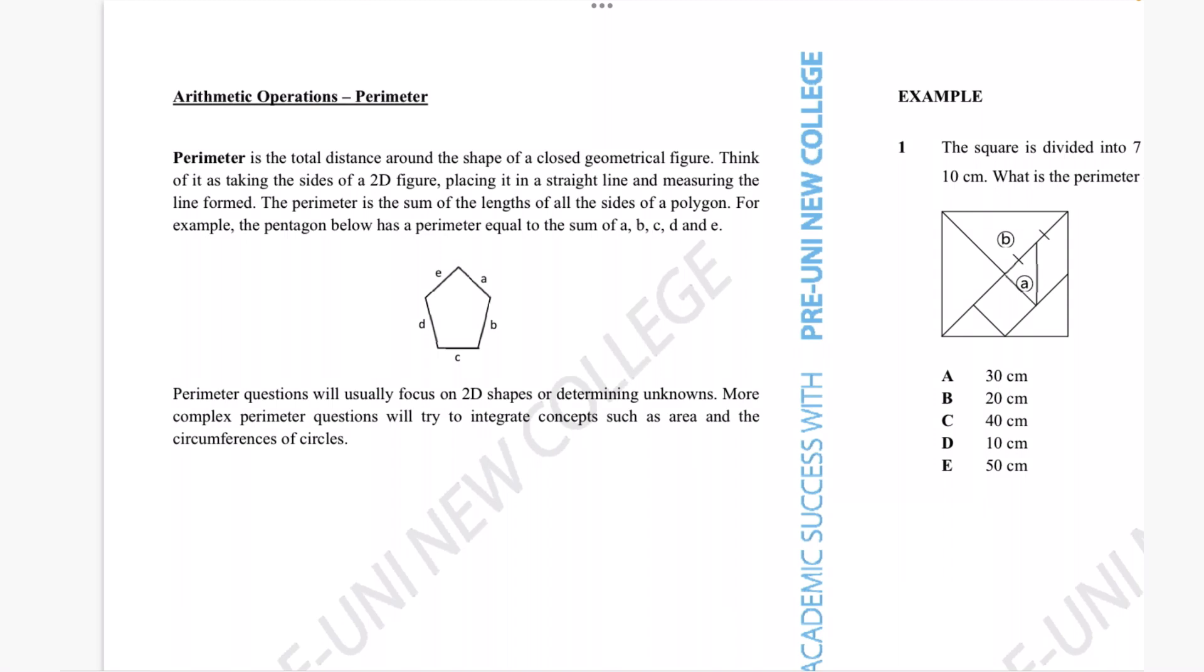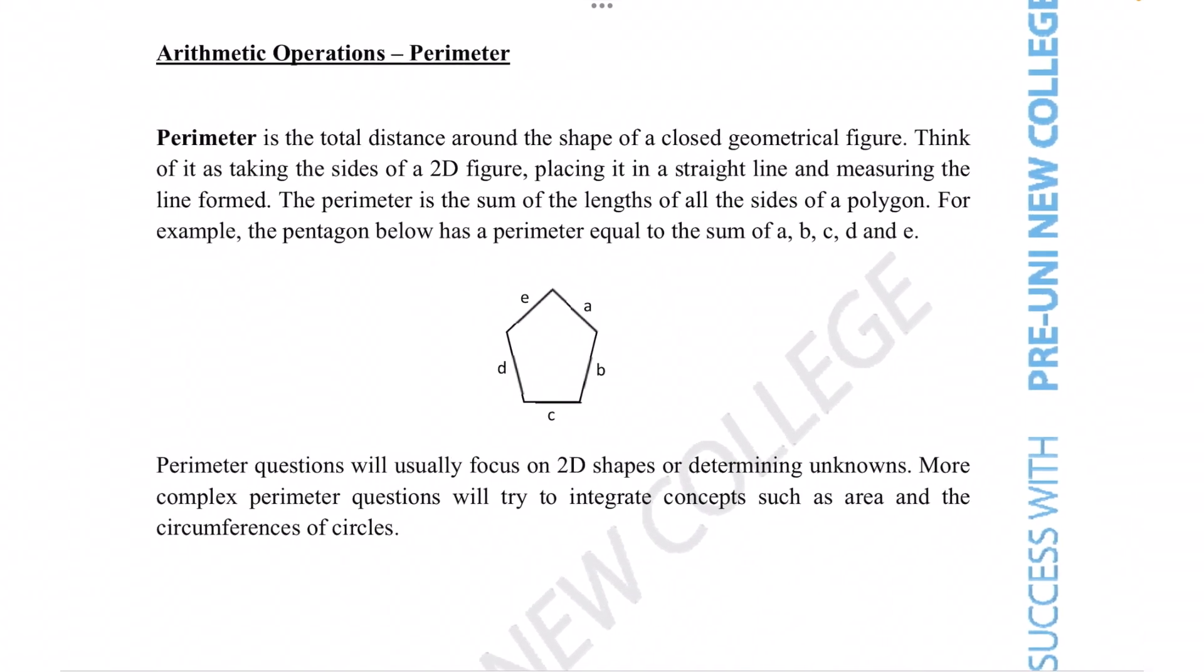We're going to begin by looking at the short description of what perimeter questions for arithmetic operations can involve. Perimeter is essentially the total distance around the shape of a closed geometrical figure. Think of it as taking the sides of a 2D figure, placing it in a straight line and measuring the line formed. The perimeter is the sum of lengths of all the sides of a polygon.